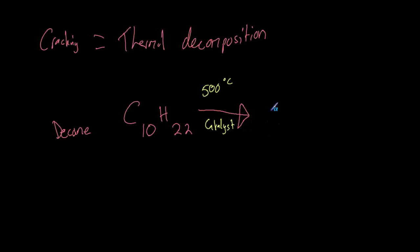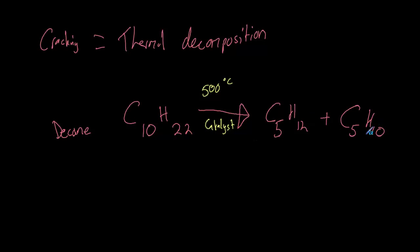Let's say in this example we get pentane, which is C5H12. Then think about it — how many carbons and hydrogens have we got left? Well, we had 10 and we've used 5, so we only have 5 left. We had 22 hydrogens and we've used 12, so we only have 10 left. So we also get a hydrocarbon with the formula CnH2N, and if you remember from the previous video, that is an alkene — pentene. The important thing to realise is that if you crack an alkane, you will produce a smaller alkane plus at least one alkene.